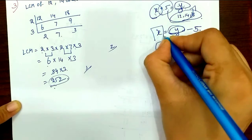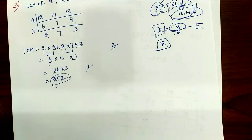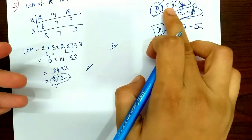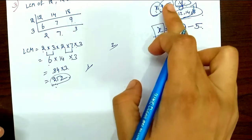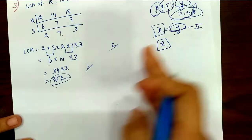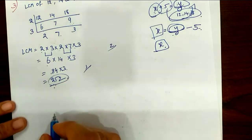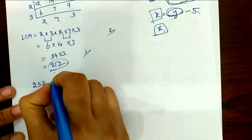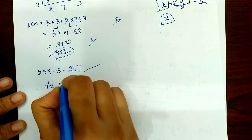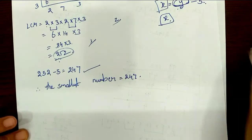We subtract 5 from 252. So the smallest number equals 247. Therefore, the smallest number is 247.